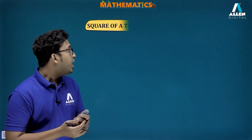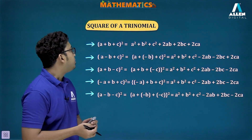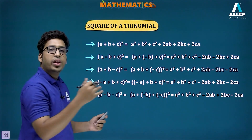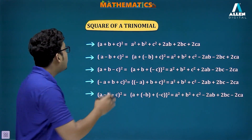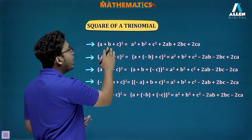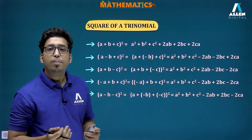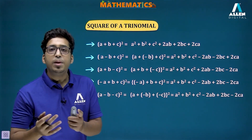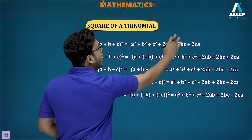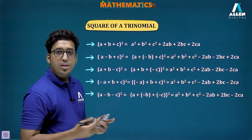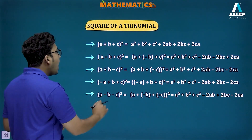Now let's understand the square of a trinomial. A trinomial has three terms, and we have to find (a+b+c)². It equals a²+b²+c²+2ab+2bc+2ca — you can take 2 as common and write 2(ab+bc+ca) inside the bracket.